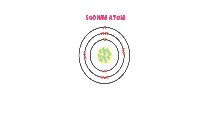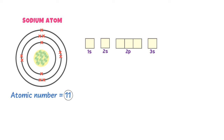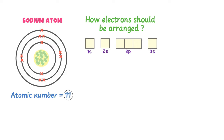Consider sodium atom. We know that the atomic number of sodium is 11. I am interested to configure the 11 electrons of sodium in 1s, 2s, 2p and 3s. But here is the most important question: how should the electrons of sodium be arranged in these orbitals?